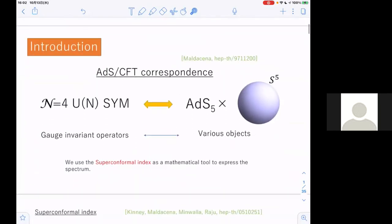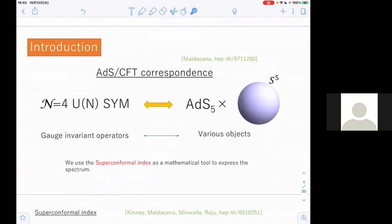We want to consider AdS/CFT correspondence, and let's consider the simplest example: the relation between N equals 4 super Yang-Mills and Type IIB string theory in the AdS5 cross S5 background. Gauge-invariant operators on the gauge theory side correspond to various objects on the AdS side. We want to discuss the spectrum of gauge-invariant operators and use the superconformal index as a mathematical tool to express the BPS spectrum.